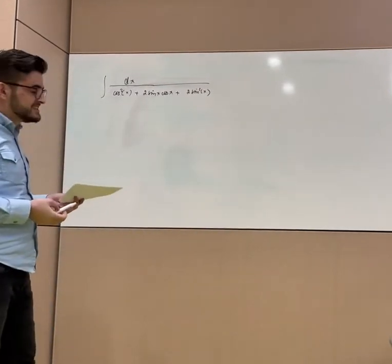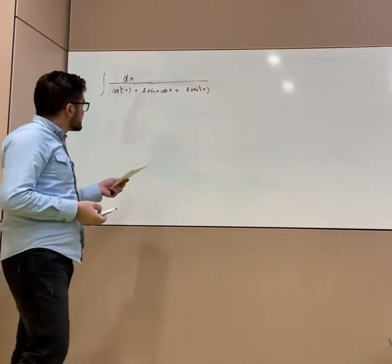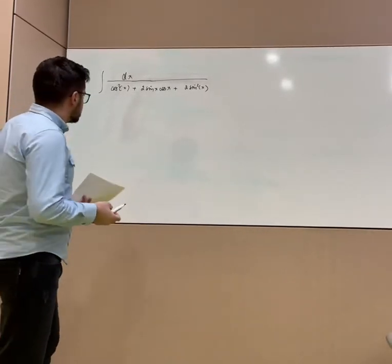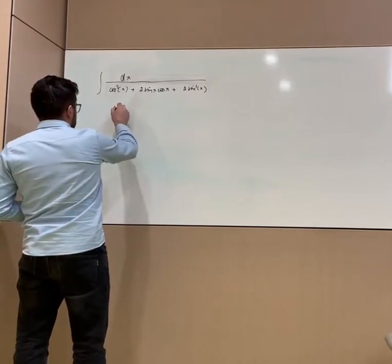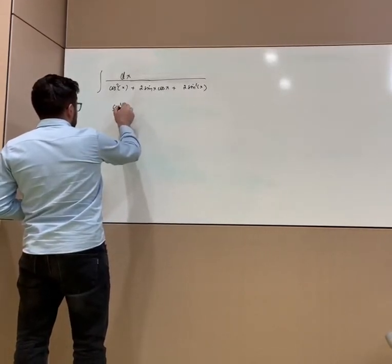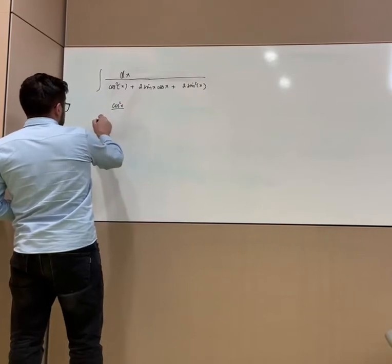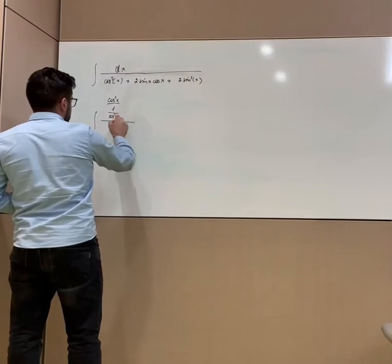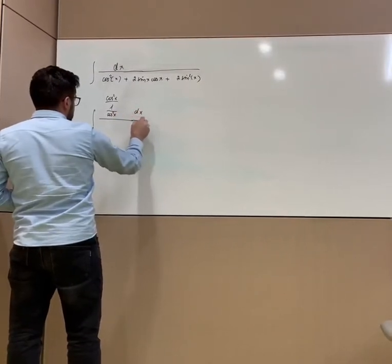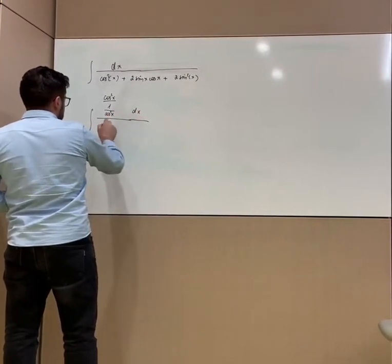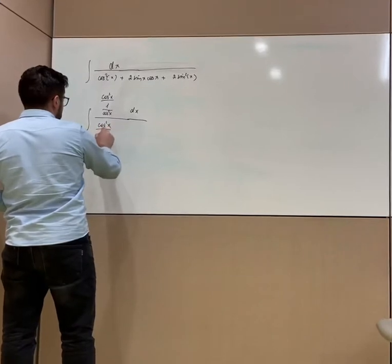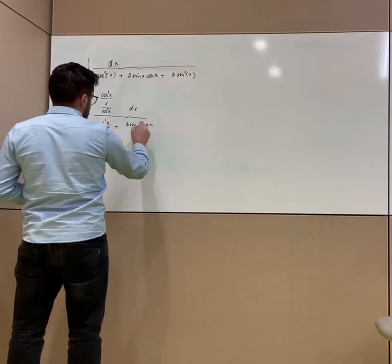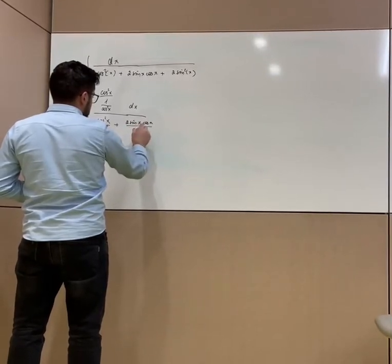It doesn't look easy, but no worries. Firstly, I will divide each part by cosine squared x. The upper part will be 1 over cosine squared x, dx, then cosine squared x over cosine squared x plus 2 sine x cosine x over cosine squared x.